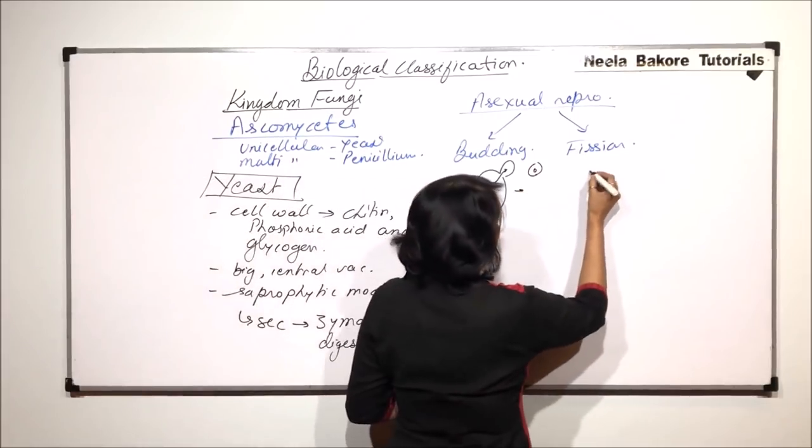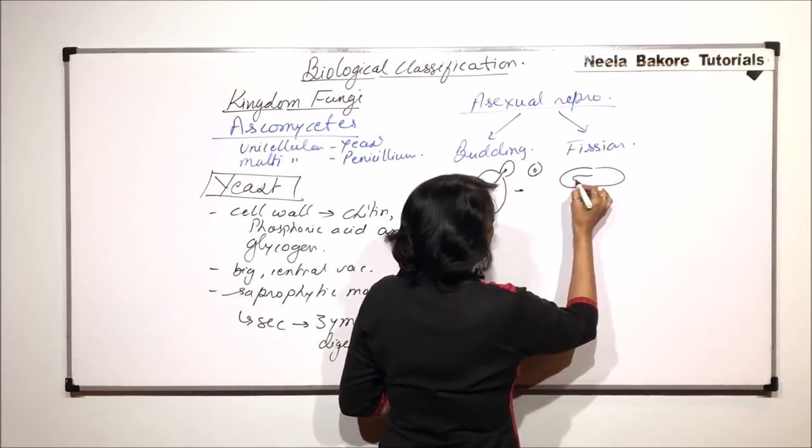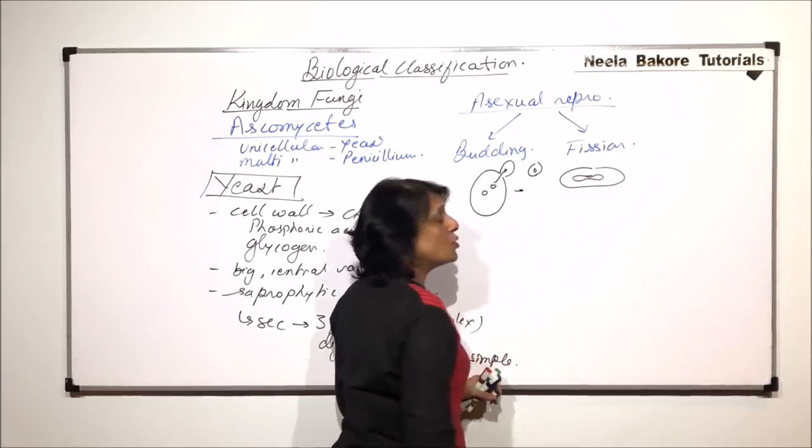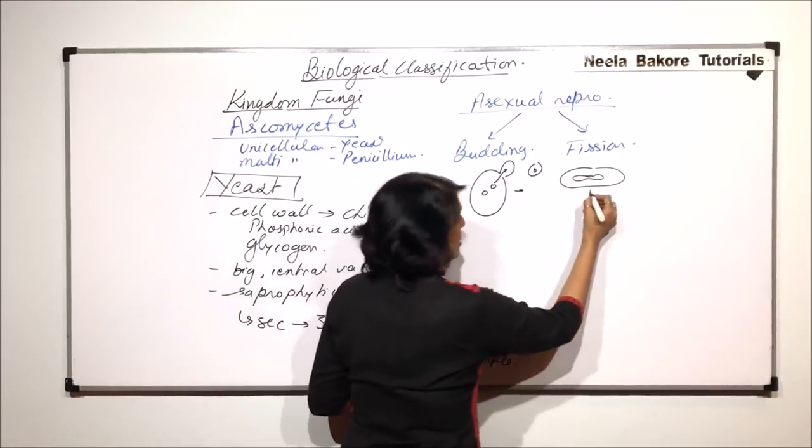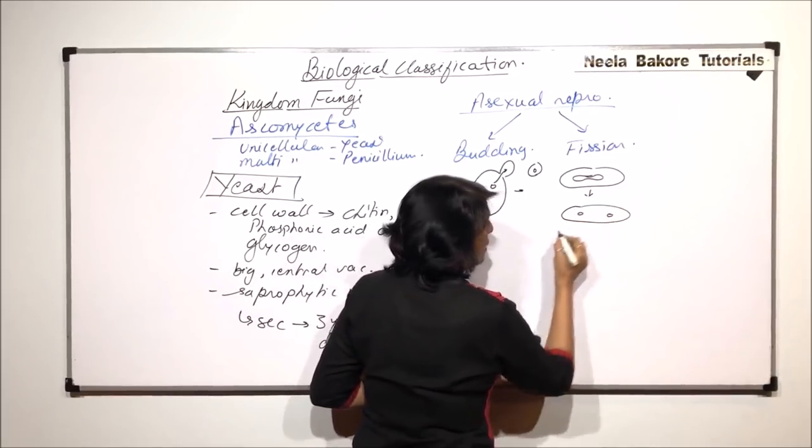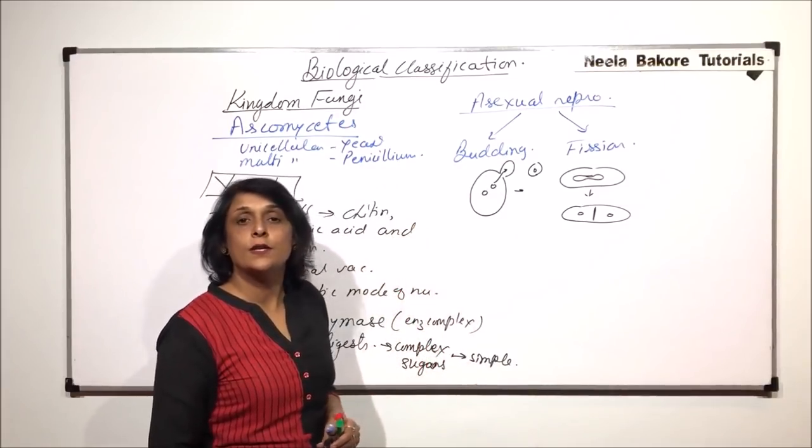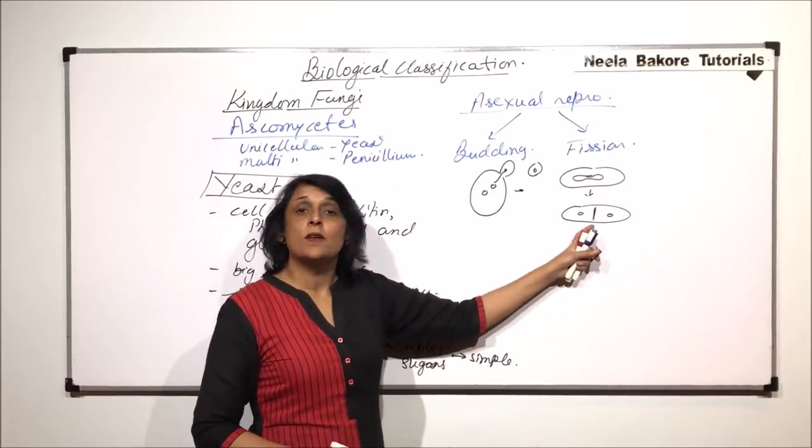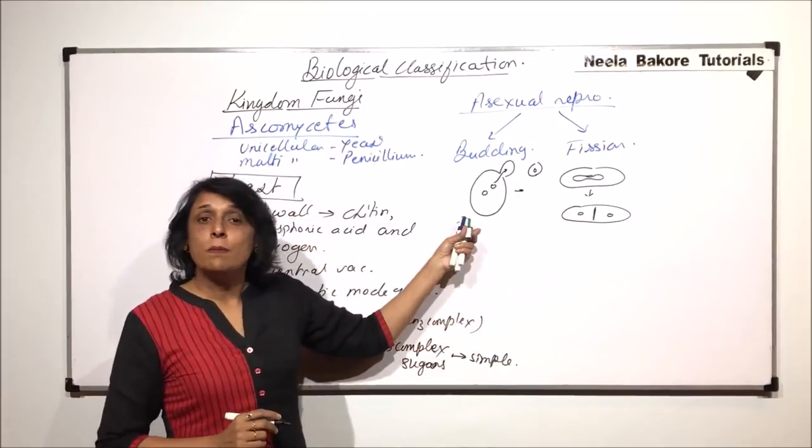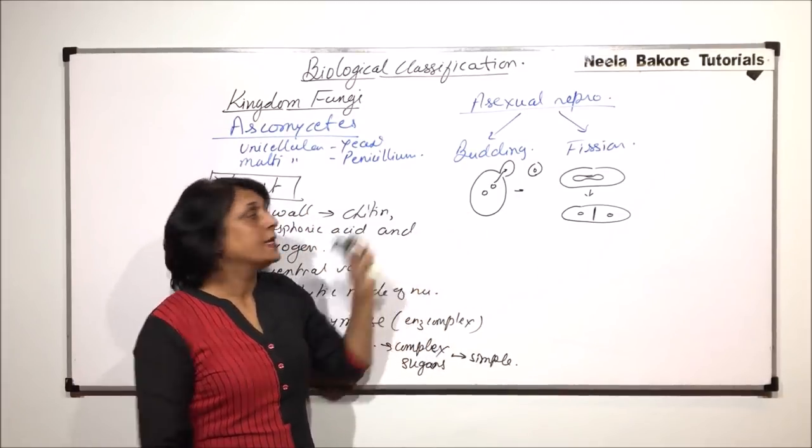One nucleus migrates here and then this bud will detach and it will lead its life. In case of fission, the cell is going to elongate like this. The nucleus also elongates showing the constriction. After this, the nuclei are formed and a plate is formed which is going to divide the cell into two. So, this is the fission method and this is the budding method.